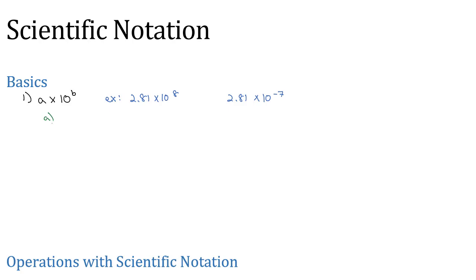For scientific notation to work, the a, that first number, has to be between 1 and 10. It's actually never equal to 10. It can go up to 9.99999, but it's always between 1 and 10.